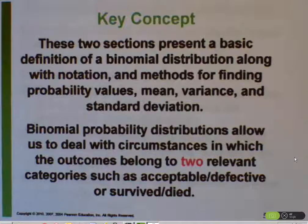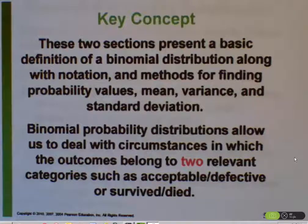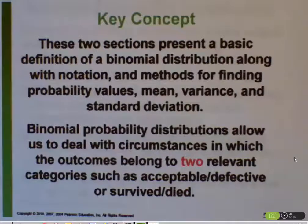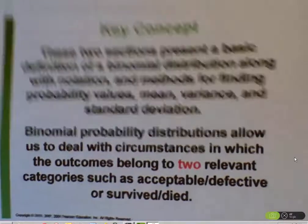Binomial probability distributions have outcomes that fall into two categories. We can call the two categories success and failure, or acceptable and defective, or survived and died. When there are only two possible outcomes, there's a good chance that you're dealing with a binomial probability distribution.